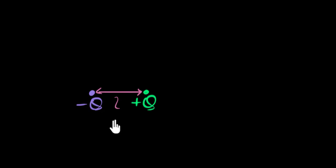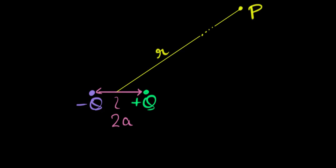Imagine we have an electric dipole — basically a negative charge and a positive charge of the same value, separated by some distance, which we traditionally call 2a. Our goal is to figure out what the potential due to this dipole is going to be at some point P, far away from that dipole, at some distance r far away.